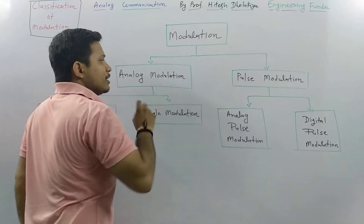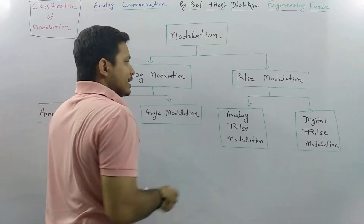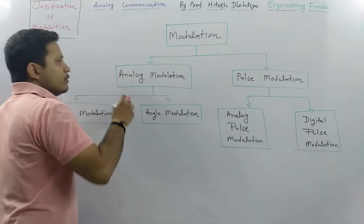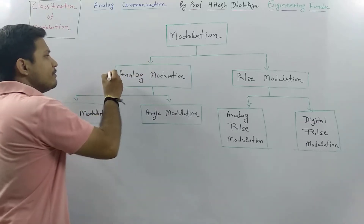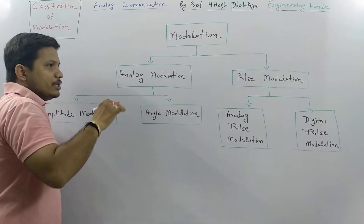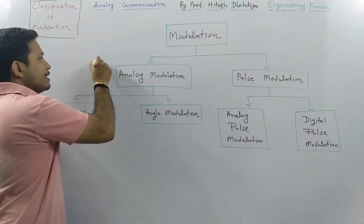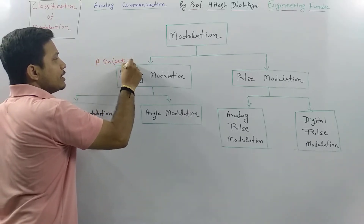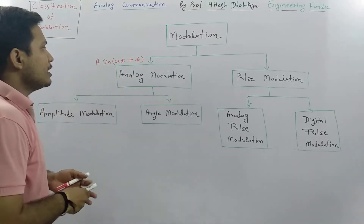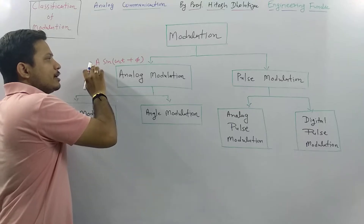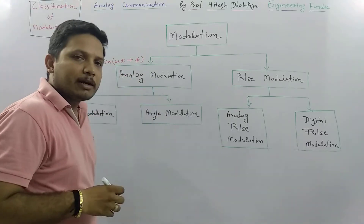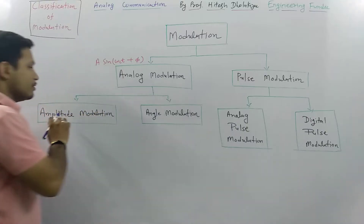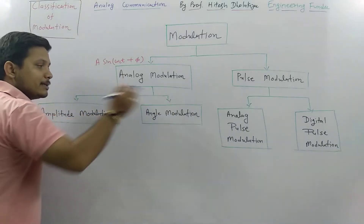Modulation is classified basically into two categories: one is analog modulation and the second is pulse modulation. In analog modulation, we have a carrier signal and we change a characteristic of that carrier signal. If the carrier signal is expressed as A sin(ωc·t + φ), then in analog modulation we change characteristics of this carrier signal. Analog modulation can further be reclassified into two categories: amplitude modulation and angle modulation.